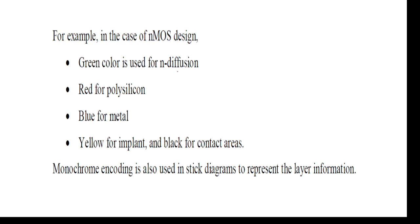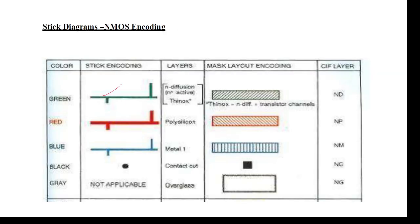To draw the stick diagrams, we should know the color codings: green color is used for N diffusion and yellow color is used for P diffusion. Red color is for poly, blue color is used for metal, and yellow is also used for implant as well as P diffusion. Black color is used for contact cut. Green color for N diffusion, red color for poly, blue color for metal — these are the mask layout symbols.